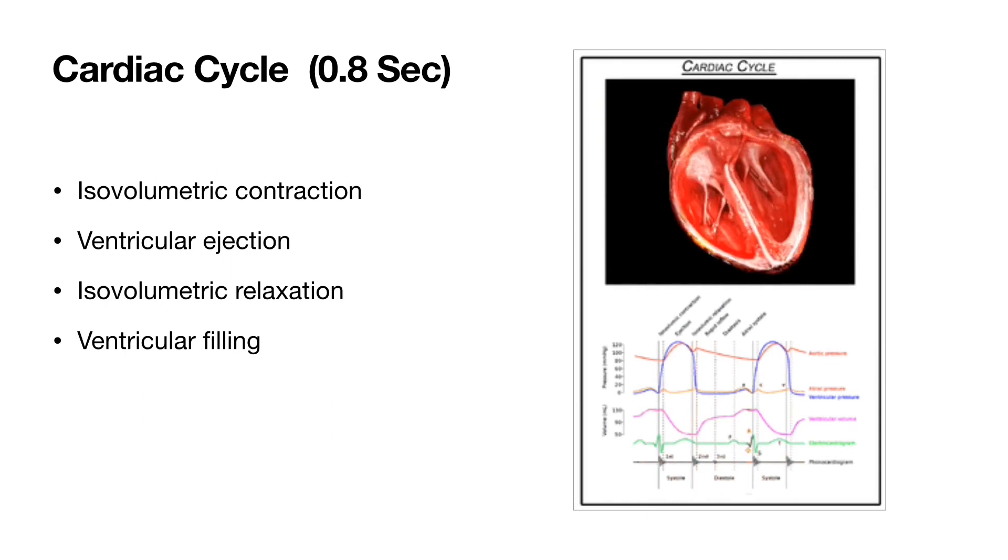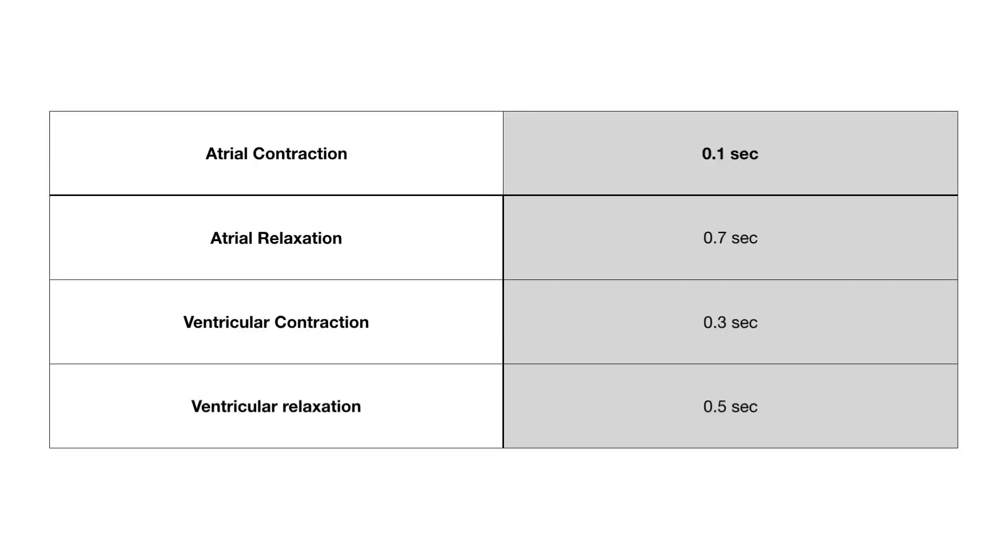The cardiac cycle consists of four phases: isovolumic contraction, ventricular ejection, isovolumic relaxation and ventricular filling. The total time of each cardiac cycle is 0.8 second where atrial contraction takes 0.1 second and atrial relaxation takes 0.7 seconds. Ventricular contraction takes 0.3 seconds and ventricular relaxation takes 0.5 seconds.